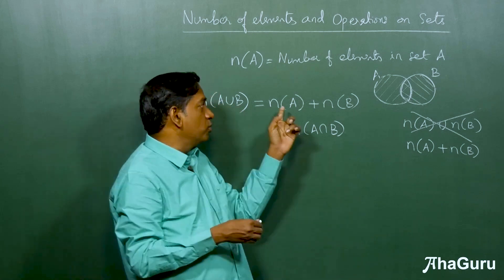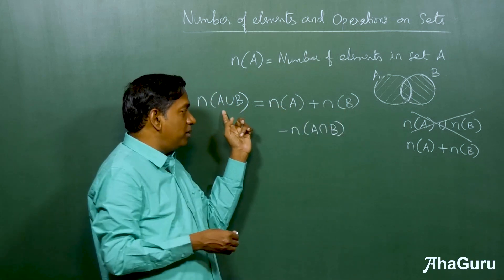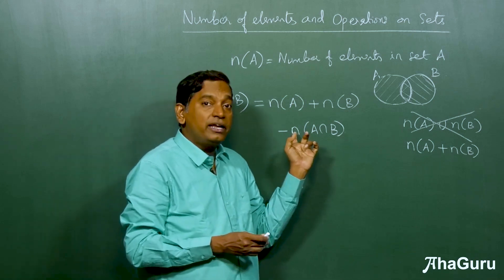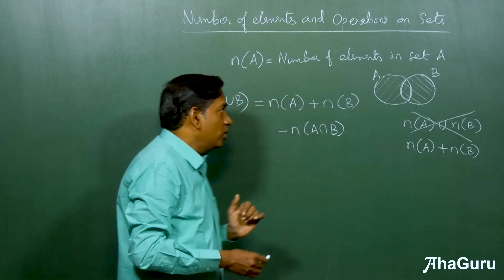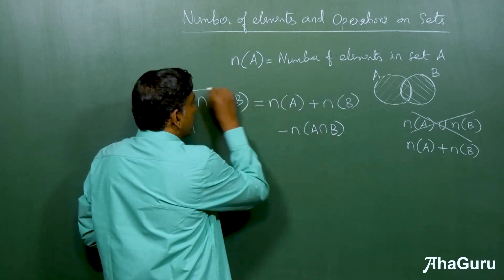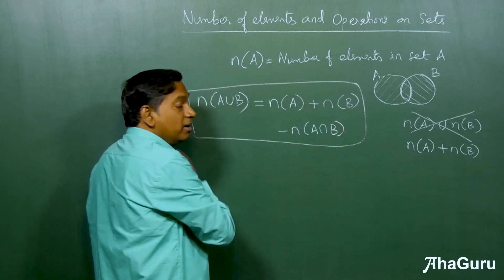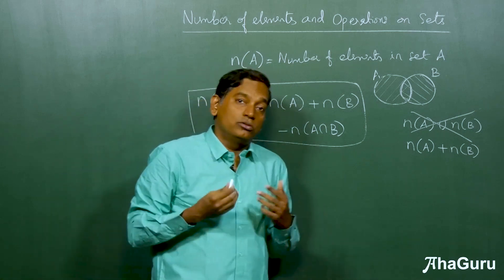Now similarly, if you know n(A), n(B) and n(A union B), you can of course find n(A intersection B). Now this idea can be applied for more than two sets also.